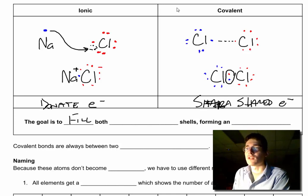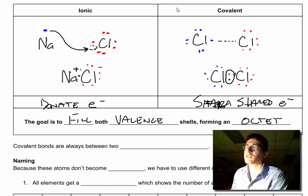The goal is to fill both valence shells, forming an octet. The octet is that set of eight valence electrons. It wants to be full. In covalent bonding, they share a pair of electrons right here in the middle.